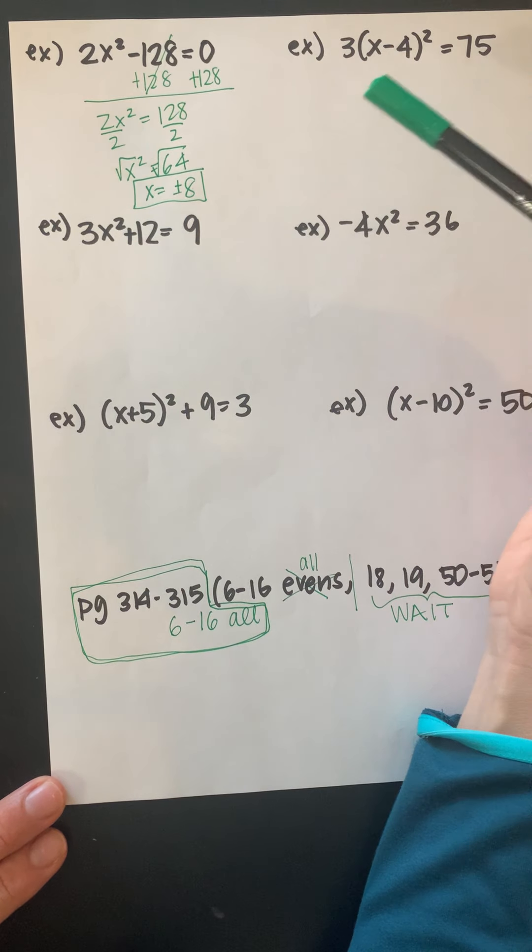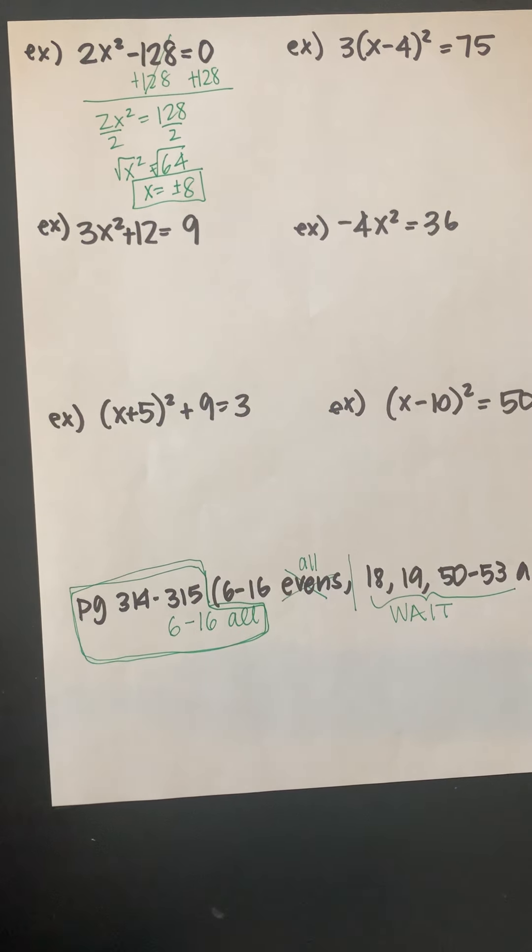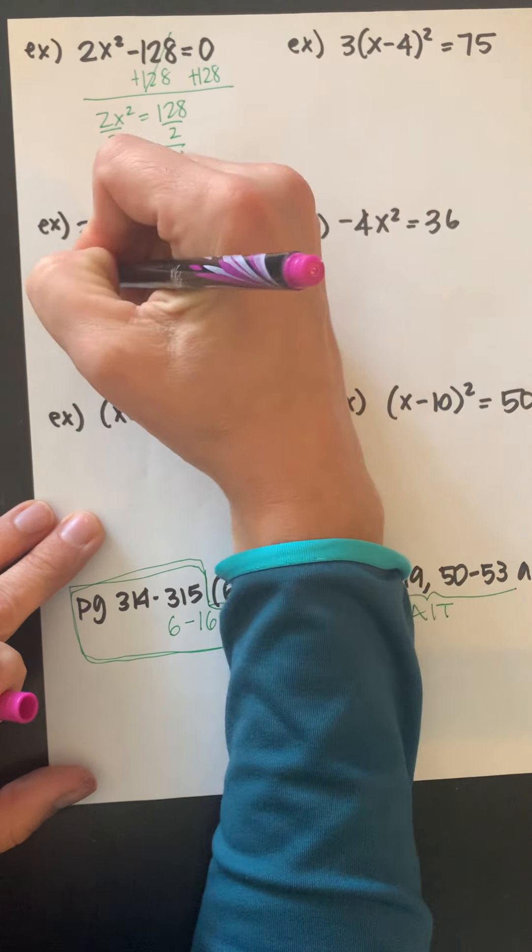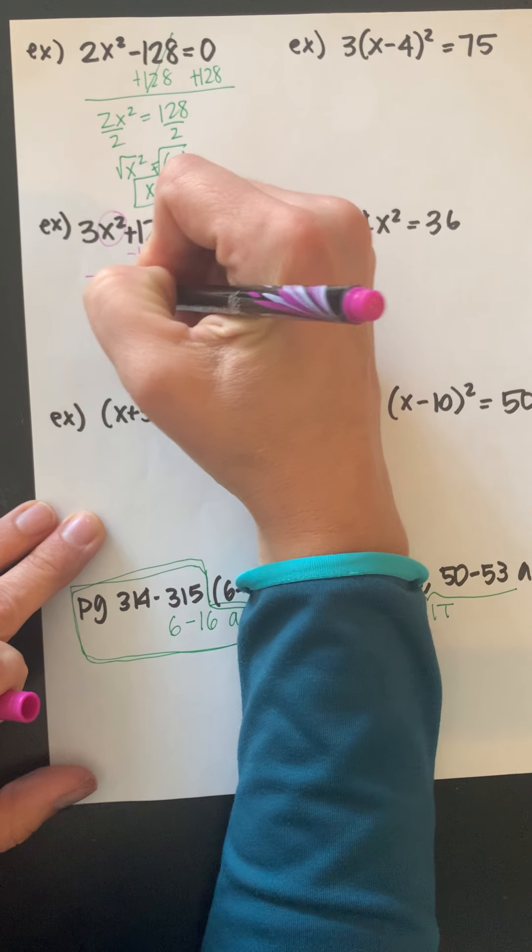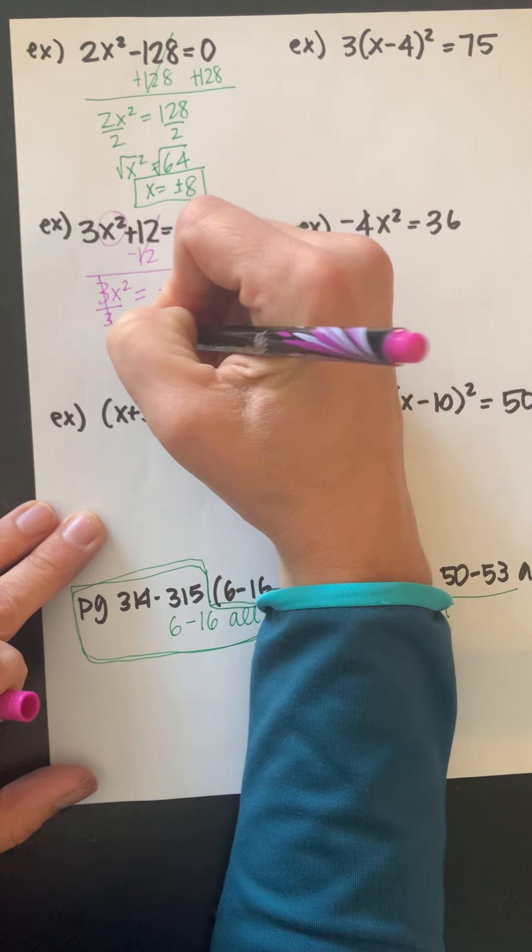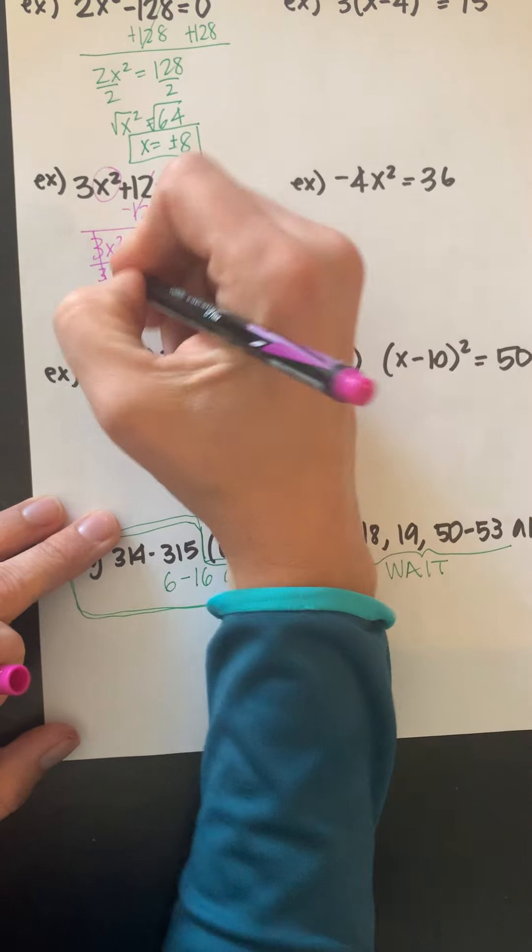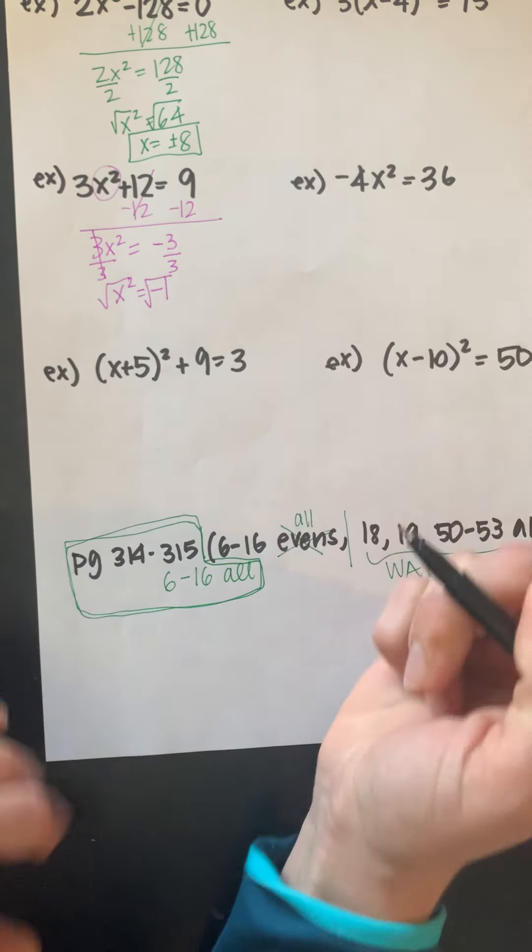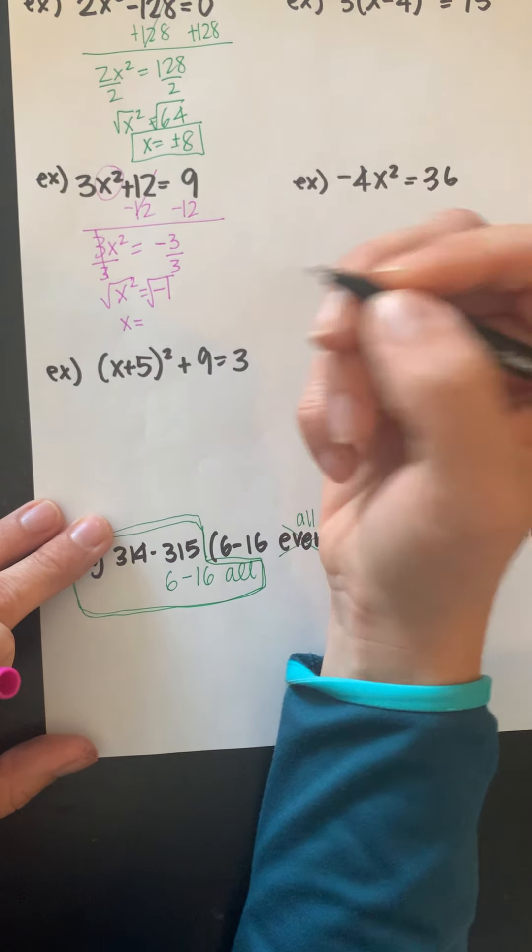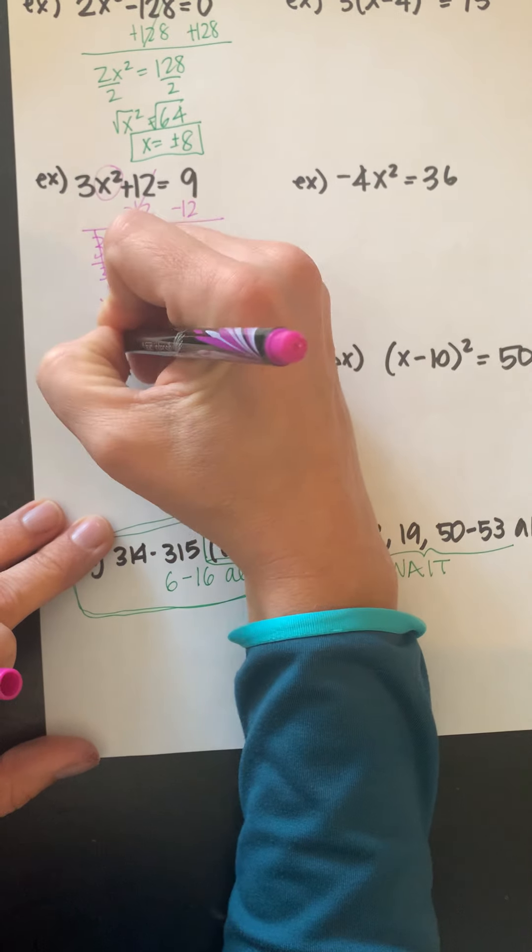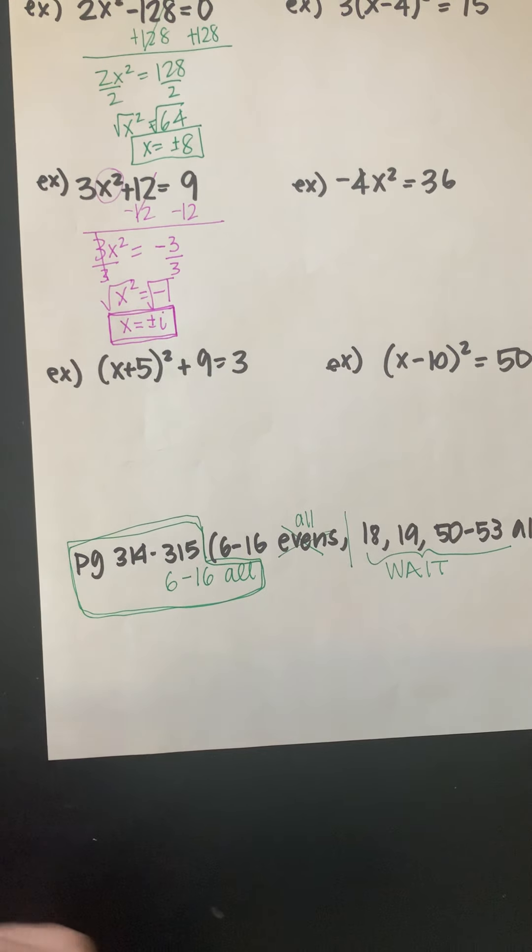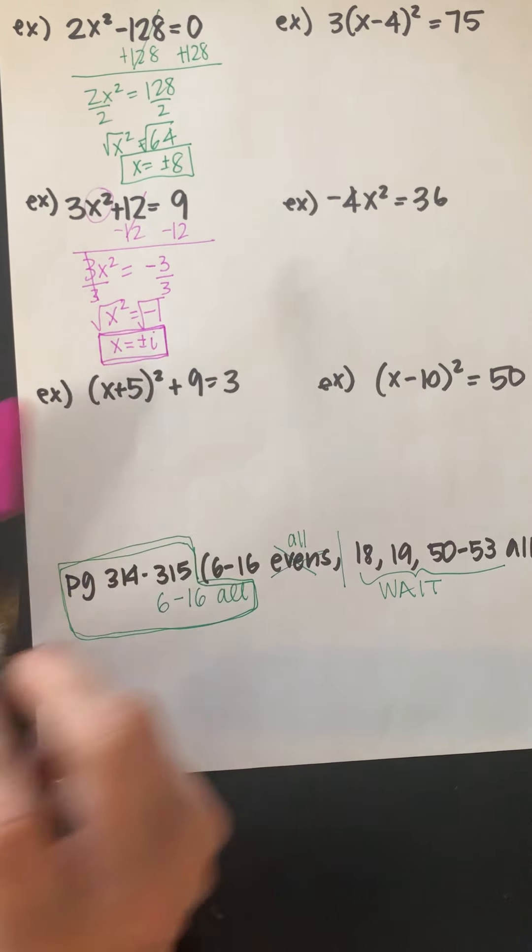Let's go down to this one. It's another one where it's just an x², so I'm going to isolate that. Move the 12 over, divide by 3. So we get x² equals negative 1. Now when I go to take the square root of negative 1, hopefully you remember that's where that i comes in. The square root of negative 1 is actually i. But since I took the square root, I need both a positive and a negative i, which is kind of weird. It seems like there can't be a negative i, but there can be. So that's an okay solution, positive and negative i.